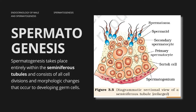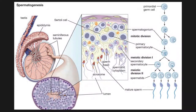Spermatogenesis takes place entirely within the seminiferous tubules and consists of all cell divisions and morphologic changes that occur to developing germ cells. The wall of the seminiferous tubules contains numerous types of cells, including the primary germ cells. The primary germ cells transform through various stages of development and finally form immature sperms known as spermatids.